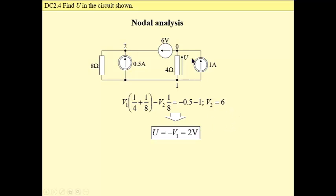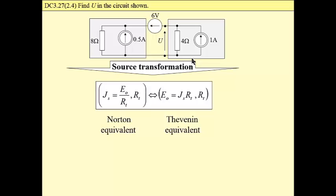Now, same problem, a different approach, a source transformation. Please observe that at the left and at the right we have a practical source, described by its Norton equivalent. We may then transform Norton equivalent to Thevenin equivalent using these formulas. Having a short circuit current and total resistance, we may calculate open circuit voltage.